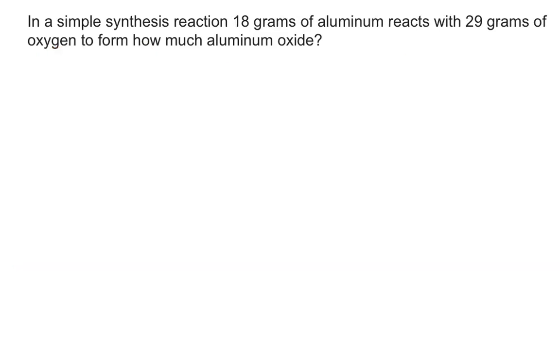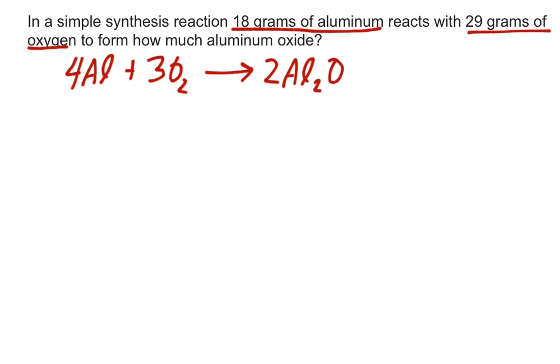We can take this one step further by looking at grams instead of moles. Now, we have our exact same problem as before, whereas we had 4Al plus 3O2 makes 2Al2O3s. So 18 grams and 29 grams. Well, we can't compare grams. So the first thing we're going to have to do is change them from grams into moles.